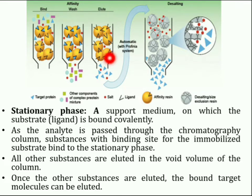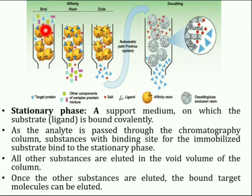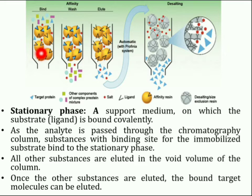The following picture shows the complete procedure of affinity chromatography. This is the column used in affinity chromatography. The yellow balls represent affinity resin, the blue ones are target proteins, and the green, sky blue, and purple ones are other components of the complex protein mixture. The first step is binding, in which the ligand binds to the matrix which is the affinity resin. The second step is washing, done by the mobile phase. In the last step, the target material is recovered by various techniques.